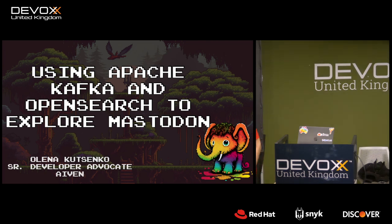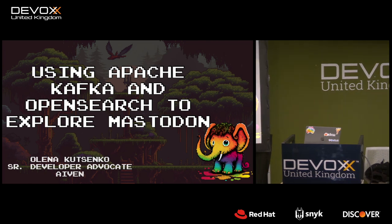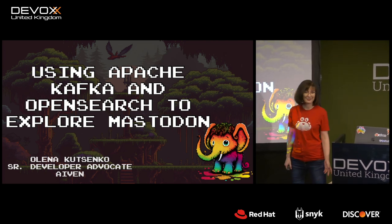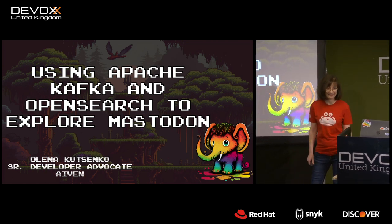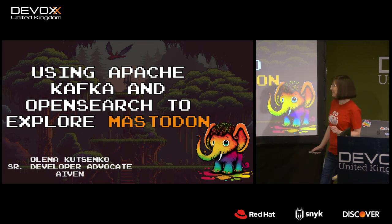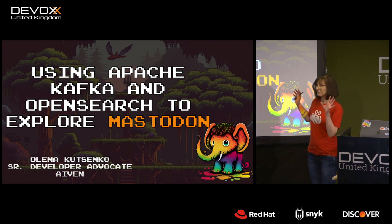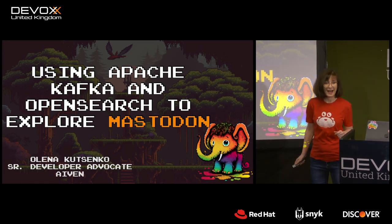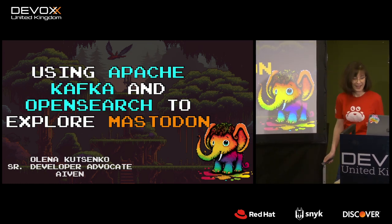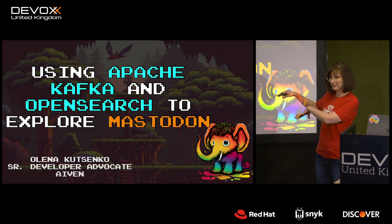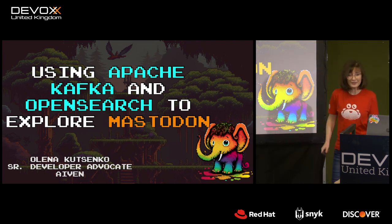I think we can begin. Thank you everyone for joining the session. My name is Olena. I am a developer advocate working for iWEN. And today, together, we will be exploring Mastodon data with the help of some really cool open source technologies, OpenSearch and Apache Kafka. If you are not familiar with these words, don't worry, we'll cover them as we go. But let's start by just describing a common scenario.